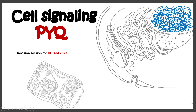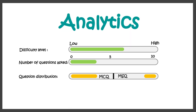In this video we'll talk about some previous year questions from the topic cell signaling. This topic is very easy to moderate, and each year reliably questions are asked from it. Question distribution is sometimes in MCQ and sometimes in MSQ, so it's a sure-shot topic that you should know before you go for the IIT JAM examination.